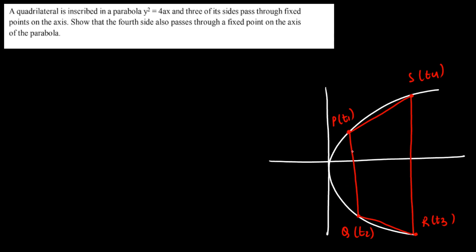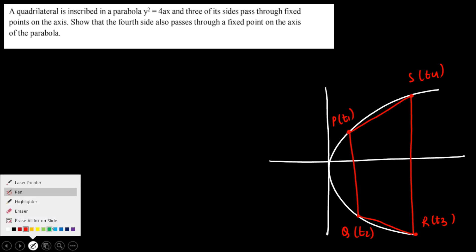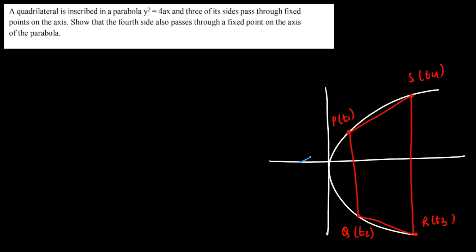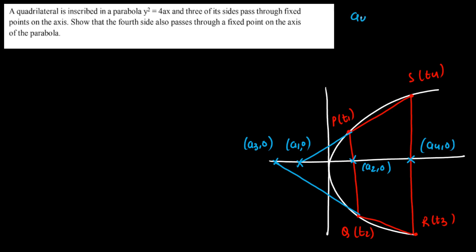They say that three of the sides pass through a fixed point on the x-axis. Let's say side PS extended passes through fixed point (a1, 0), side PQ passes through (a2, 0), and side RS passes through (a3, 0). These three values are considered constant. We need to prove that the fourth side QR passes through a fixed point (a4, 0) on the axis, and we can also calculate a4.